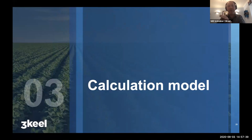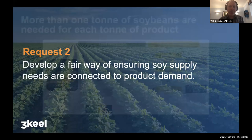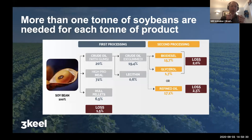We've provided a few different ways in the calculation model to make it relevant to the information you have — because ultimately the calculator should not take you three weeks to start using within your business. It's designed to use the simplest information available to get you a soy footprint. The second ask that RTRS gave us was to develop a fair way of ensuring that the soy supply needs are connected to product demand. Going back to Roberto's analysis is defining how we can see where the various co-products of soybeans are being used and how much of them are being used.